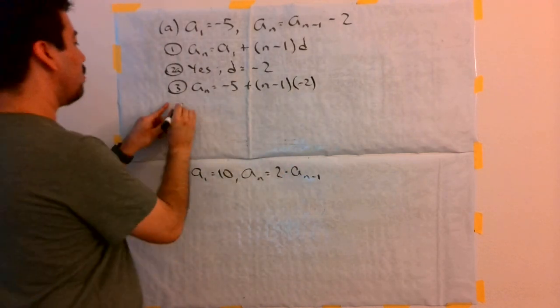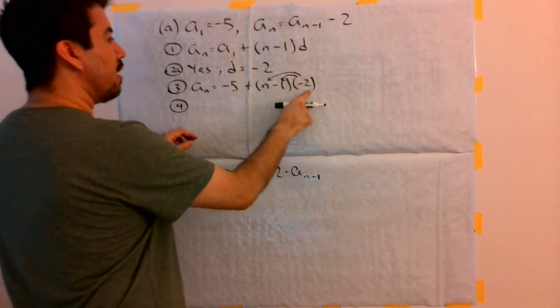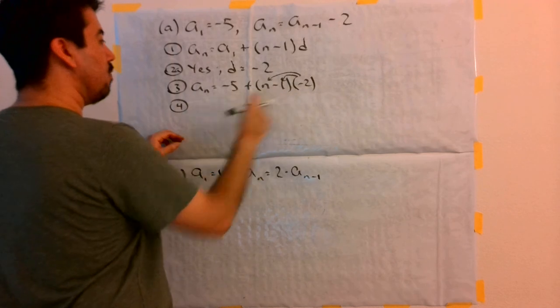Step 4 says to simplify it, which means I'm going to distribute that negative 2 to the n minus 1, or multiply negative 2 times n, and then negative 2 times negative 1.